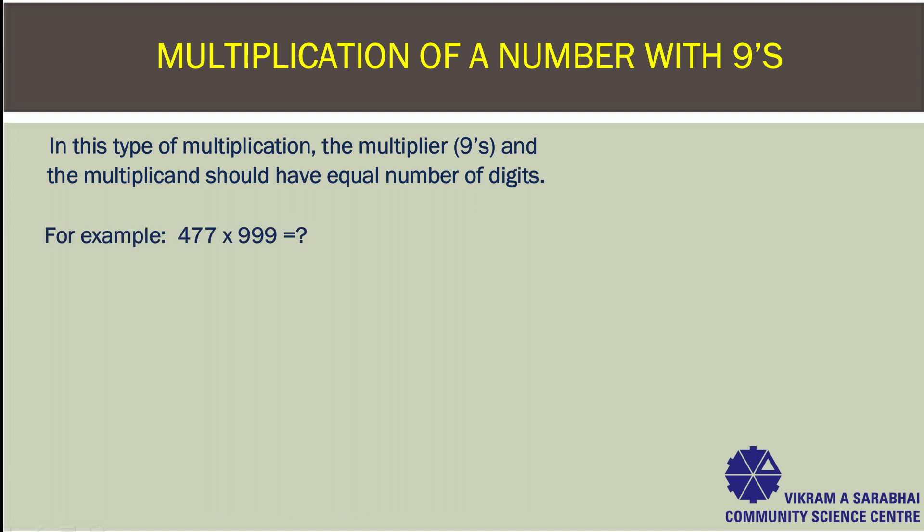For example, what you will get when you multiply 477 with 999? Step 1: Subtract 477 by 1. That is 477 minus 1. You get 476.